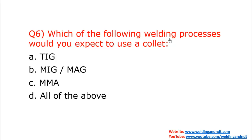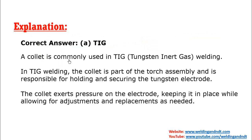Question number six: which of the following welding processes would you expect to use a collet? A collet comes in the electrode assembly and basically holds the tungsten electrode. It is used in TIG welding. It is a part of the torch assembly. The collet holds the tungsten electrode in the holder. The collet is commonly used in TIG — tungsten inert gas welding — and is responsible for holding and securing the tungsten electrode.